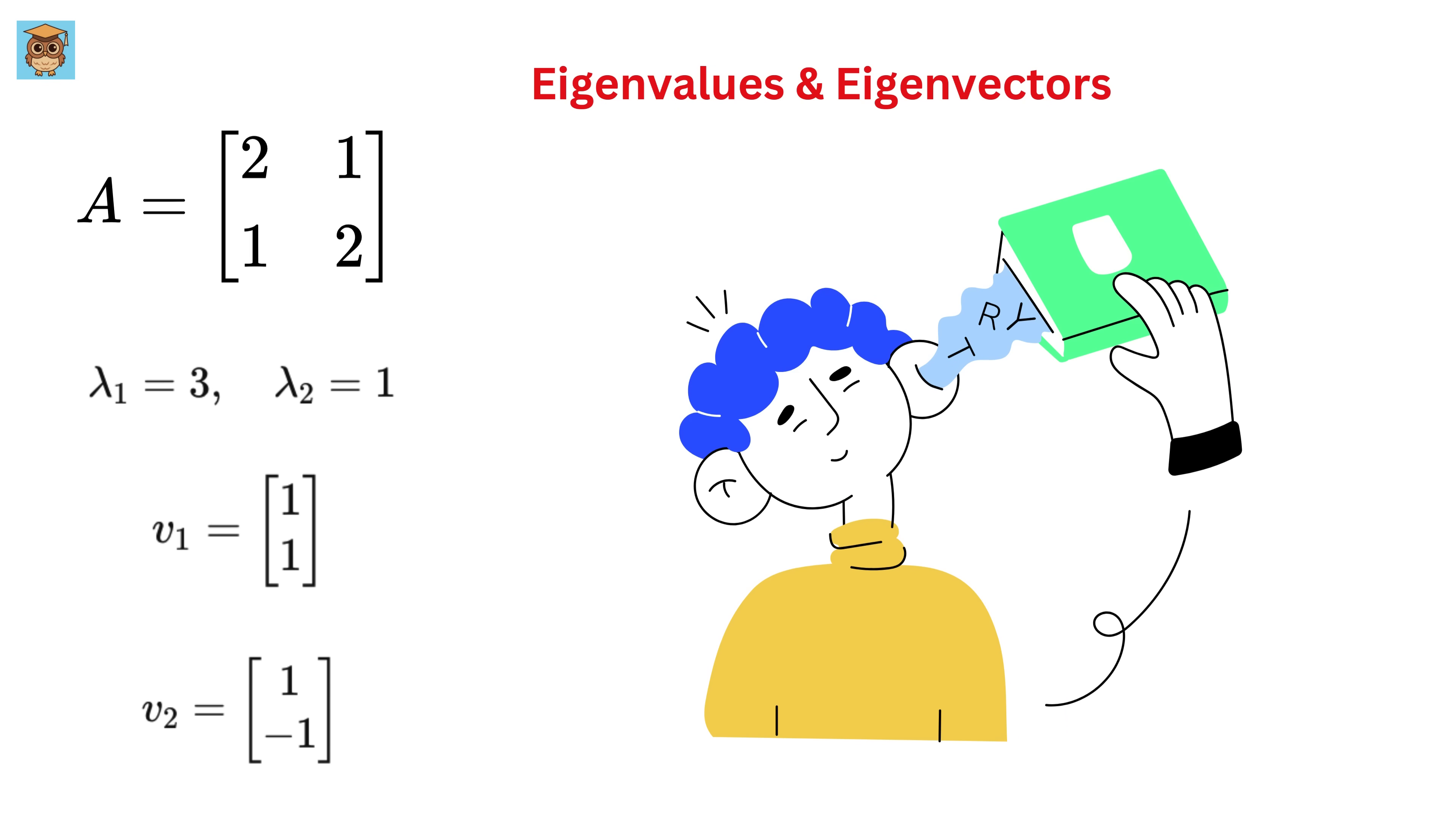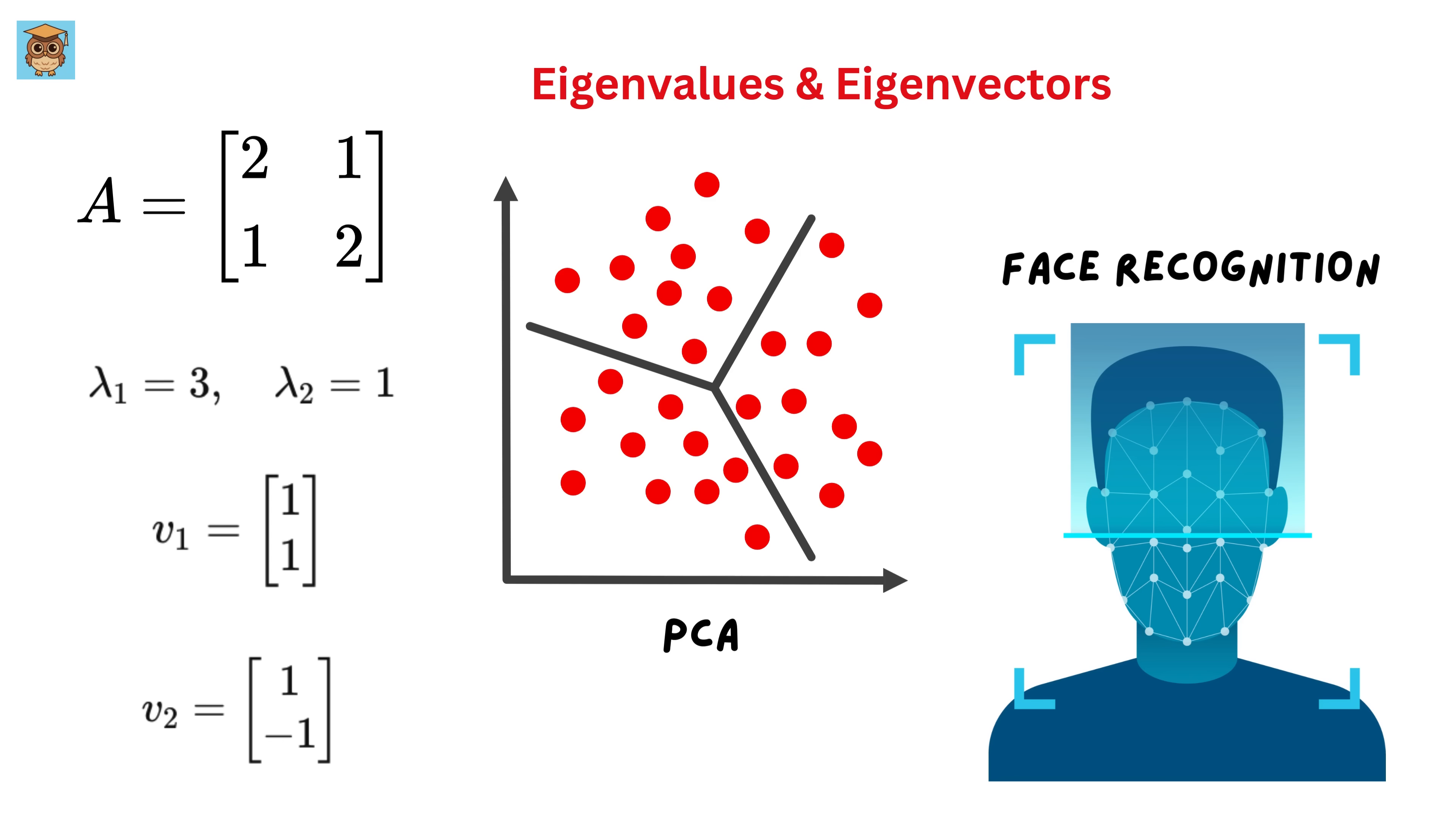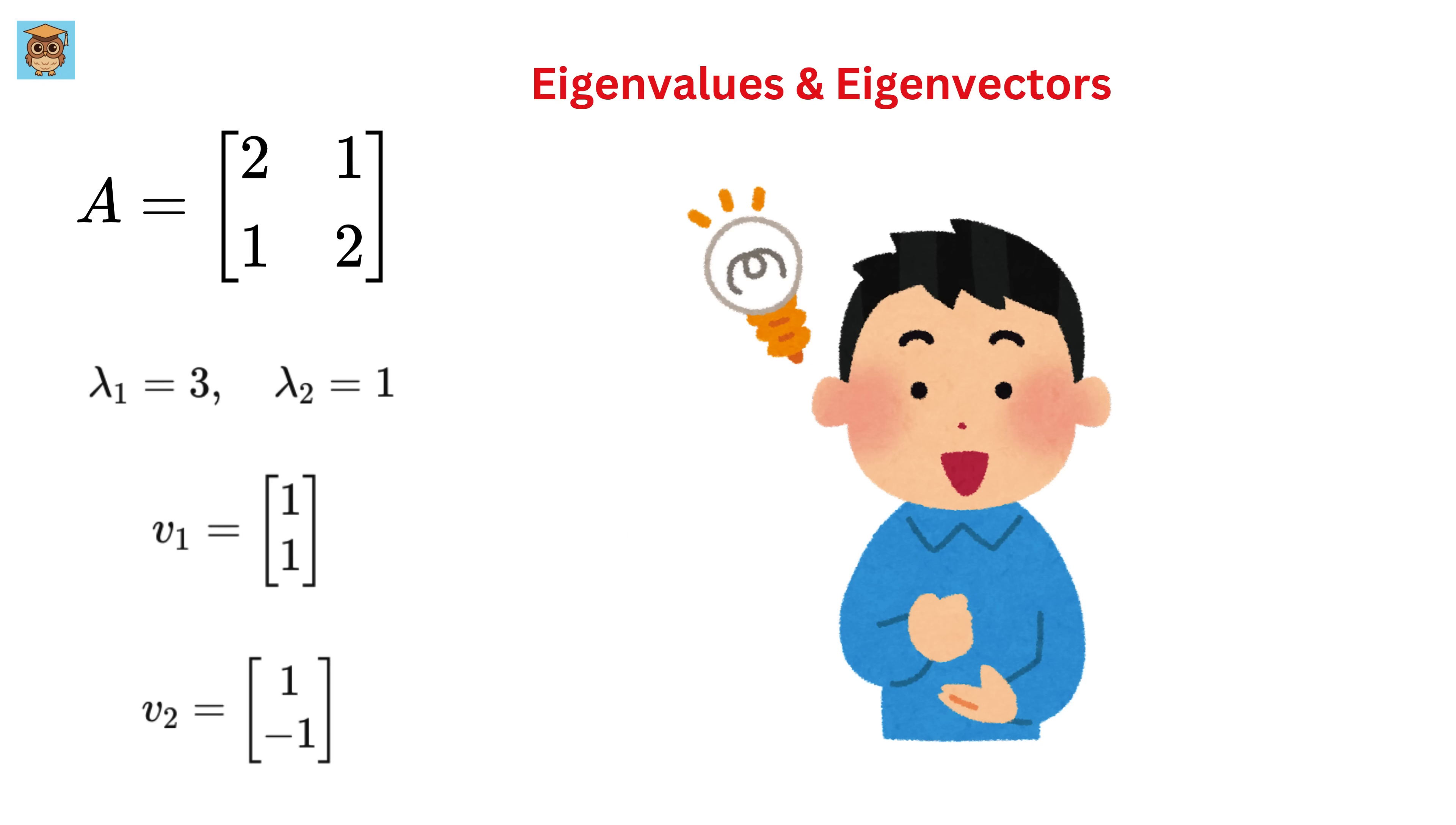We were simply told to somehow learn the steps to calculate them and then forget about it. This is the main reason many people hate math, because they are taught how to calculate things but never why they matter or what they truly mean. So are eigenvalues and eigenvectors just some fancy numbers and vectors that pop out of an equation, or do they have a deeper, more intuitive meaning? And most importantly, can we actually visualize them? Well, in this video, we are going to see eigenvalues and eigenvectors in action so that they finally make sense.